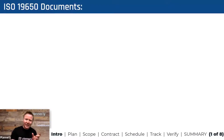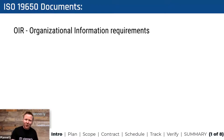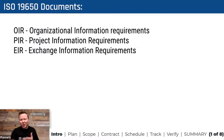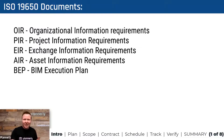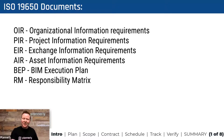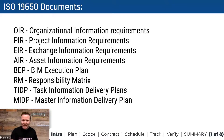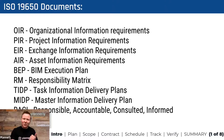As a result of that workflow, we end up with a set of documents as well. Those documents range from organizational and strategic-based information requirements, through project information requirements, exchange information requirements, asset information requirements, BIM execution plans — pre- and post-appointment — pre- and post-contract planning so you can execute with methods and procedures, responsibility matrices at a high level or detailed level, task information delivery plans, master information delivery plans, RACI charts — who's responsible, accountable, consulted, informed — and many others.